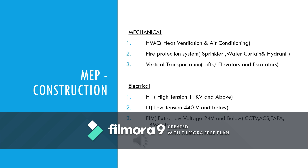Same thing in electrical — we have three divisions: HT, LT and ELV. HT is altogether before the transformer, all the high tension lines 11 kV and above. LT is low tension which is 440V and below. ELV, extra low voltage, is generally used for CCTV, access control, FAPA, BMS, etc.